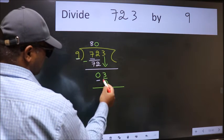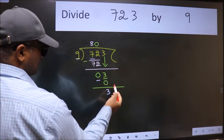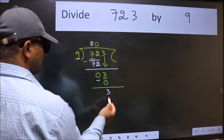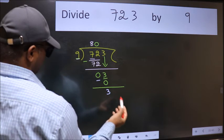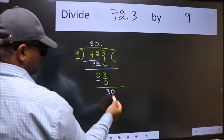Now we subtract, we get 3. Over here, we did not bring any number down, and 3 is smaller than 9. So now we can put dot and take 0, so 30.